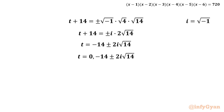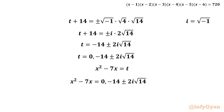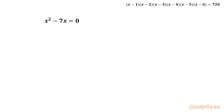Recall that t was our substitution for x² − 7x, so we replace t back. This gives two equations: Equation 1: x² − 7x = 0, and Equation 2: x² − 7x = −14 ± 2i√14.